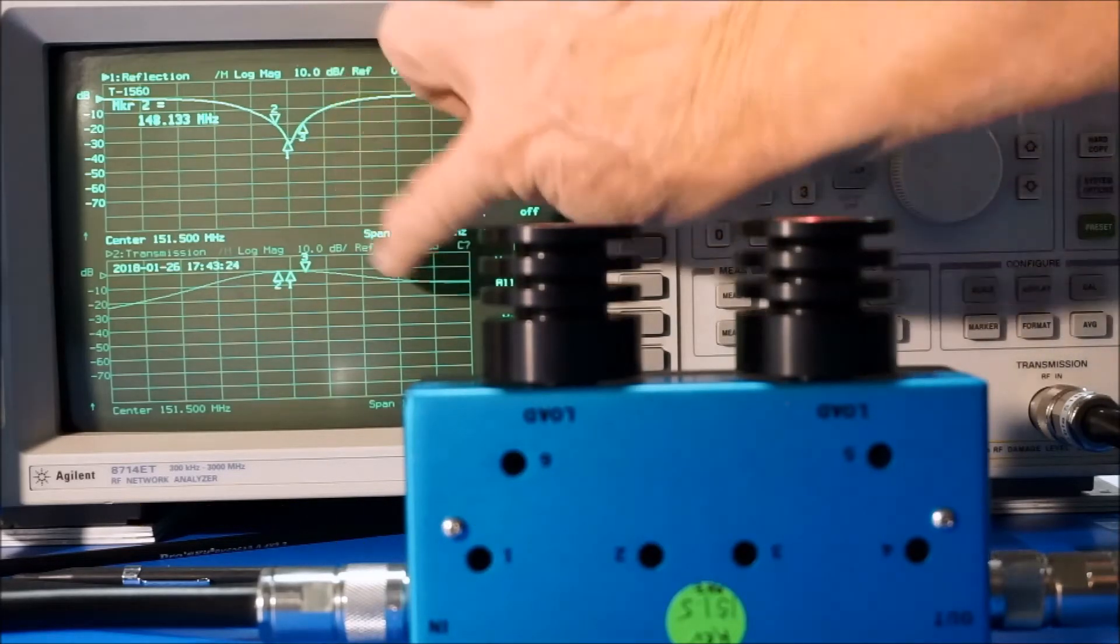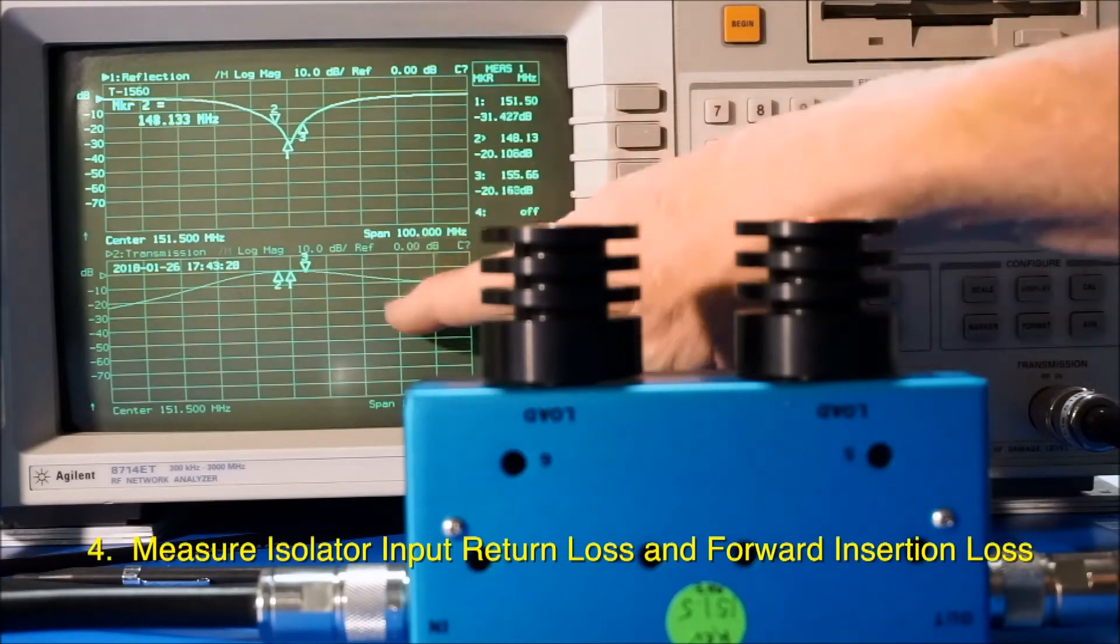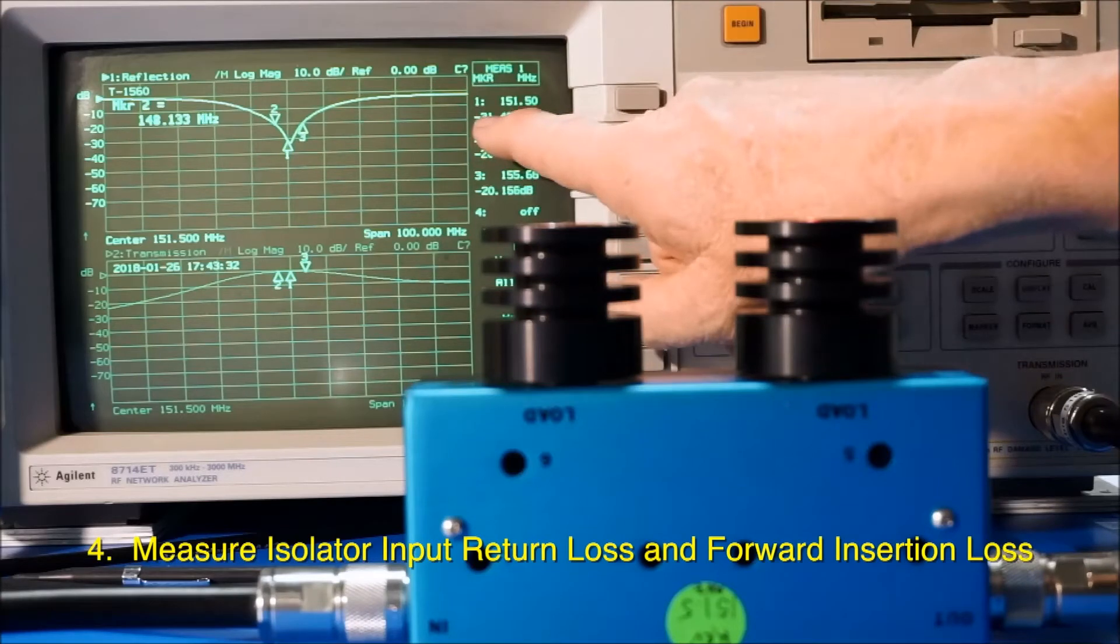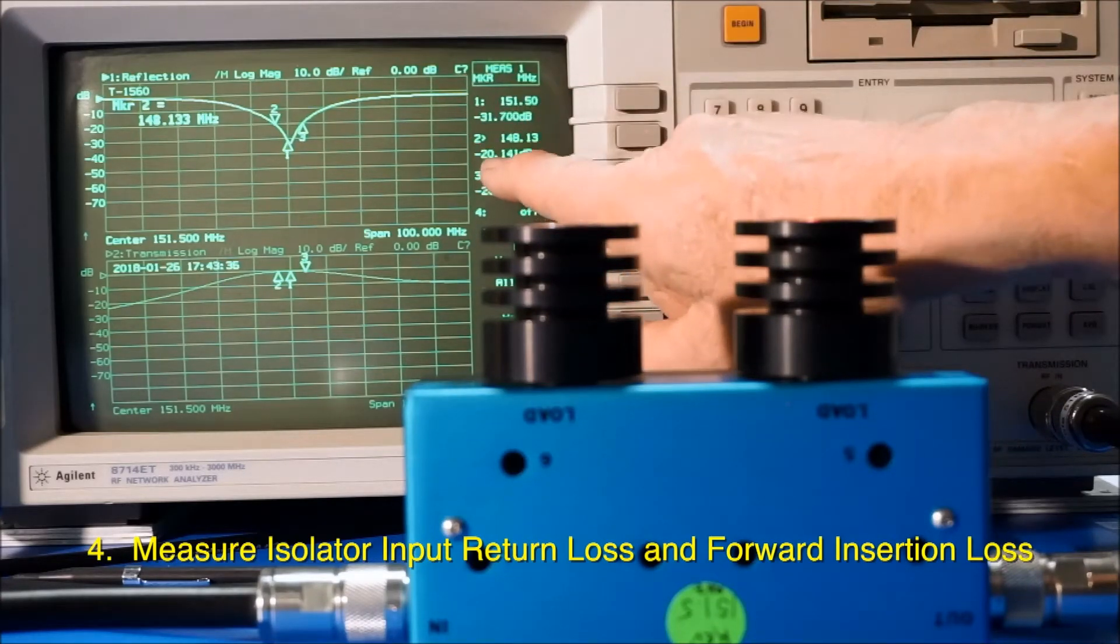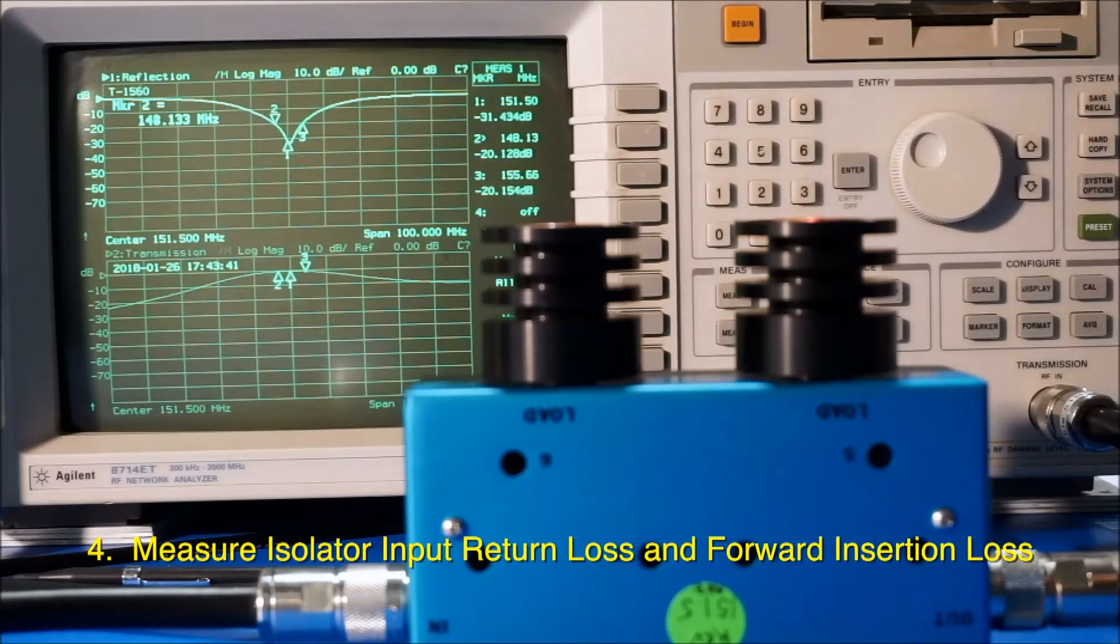Here's the results that we have on the two frequencies. In measure one, we're looking at the return loss here. It's 31 dB at 151.5, which is really good. It's still 20 dB at 148 and 155, which is acceptable as well. So it can work over that range without having a match input or output problem.